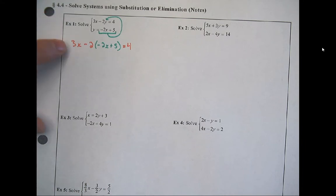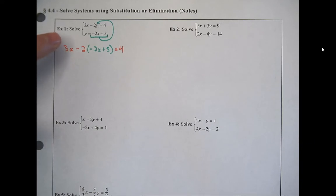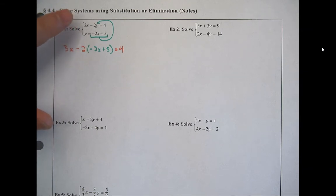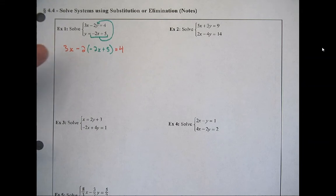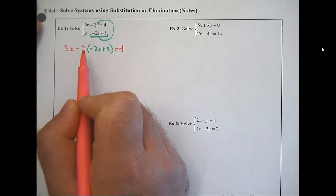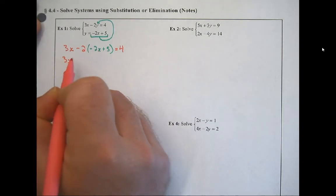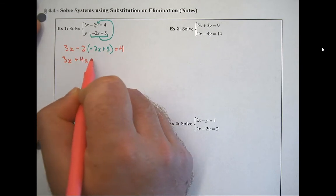Instead of having 3x subtract 2y equals 4, I'm going to have 3x subtract 2 times the quantity negative 2x plus 5 equals 4. We took out the y and replaced it with something equal to it. Our goal when solving a system is to get down to one equation with one variable, because then we can use our solving techniques to find the answer.